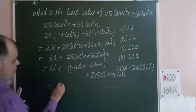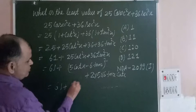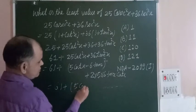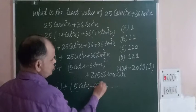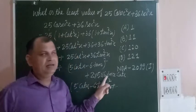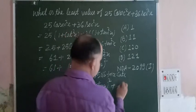So we get 61 + (5 cotx - 6 tanx)² plus 2 times 5 times 6, which is 60. So this will be 60 + 61 = 121 plus (5 cotx - 6 tanx)².